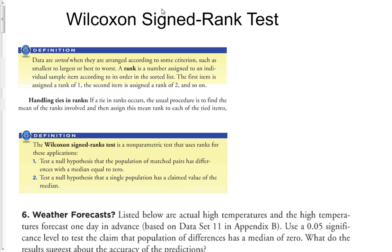Another non-parametric test is the Wilcoxon signed rank test. Data are sorted when they are arranged according to some criterion, such as smallest to largest or best to worst. A rank is a number assigned to an individual sample item according to its order in the sorted list. The first item is assigned a rank of 1, the second item is assigned a rank of 2, and so on.